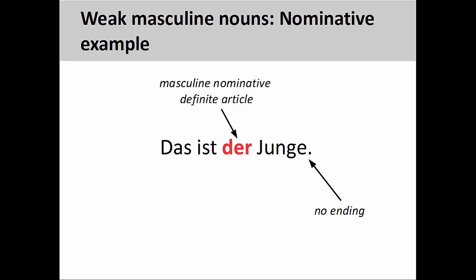In the sentence you see on the screen, das ist der Junge — that is the boy — the noun der Junge is in the nominative case since the third person singular verb ist shows no action. It simply reports a condition or state of being. Since the noun is in the nominative, no ending is added.